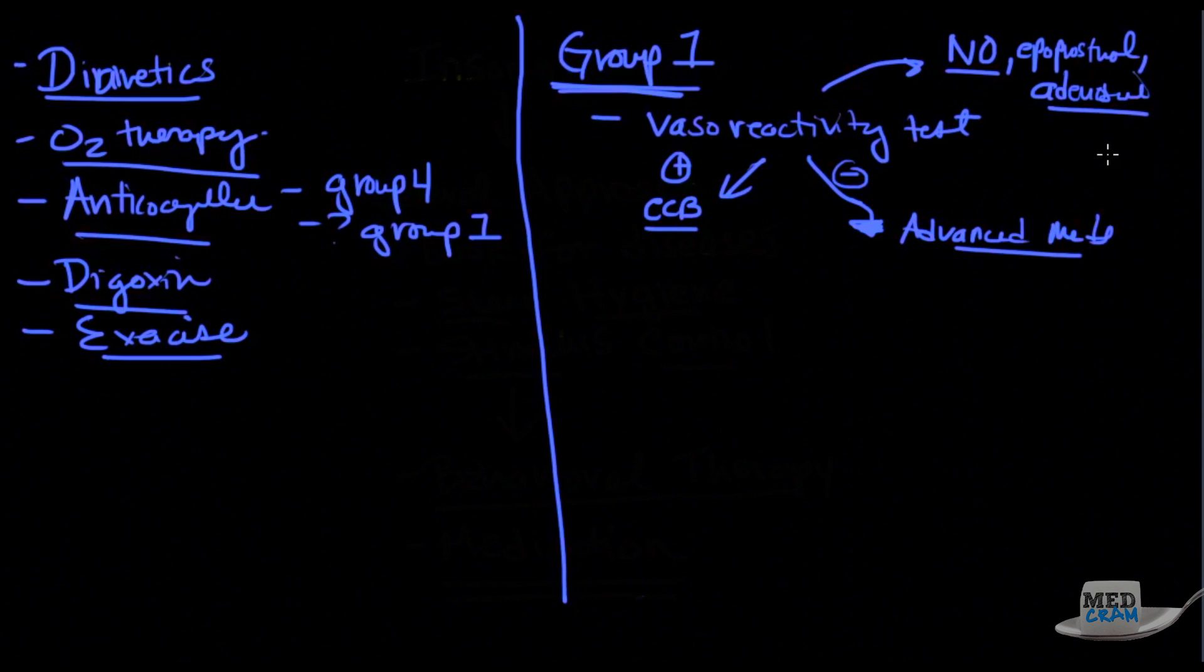Once again, it's considered positive if the mean pulmonary artery pressure decreases by at least 10 millimeters of mercury and goes to less than 40 millimeters of mercury. This is assuming that the cardiac output actually gets better or it's unchanged. And as we mentioned, patients with a positive reactivity test are ones that could improve with calcium channel blockers. Those that are negative will not respond to calcium channel blockers.